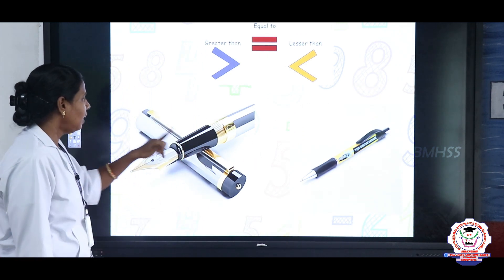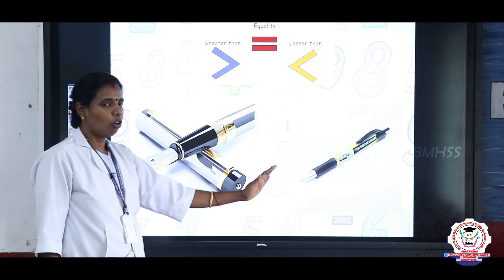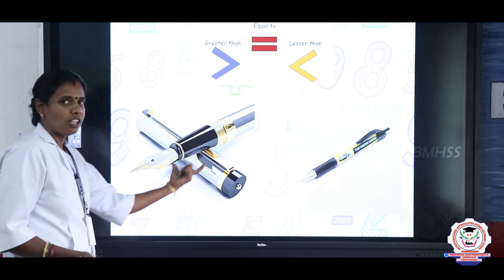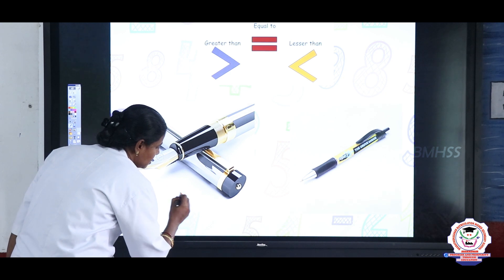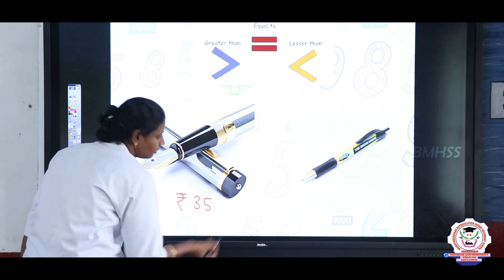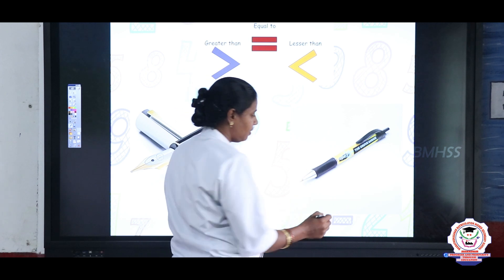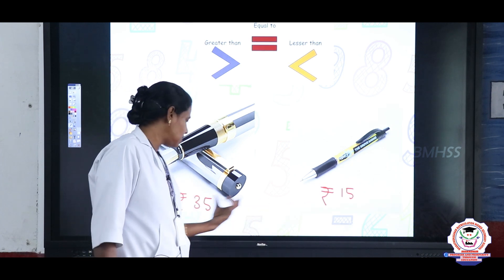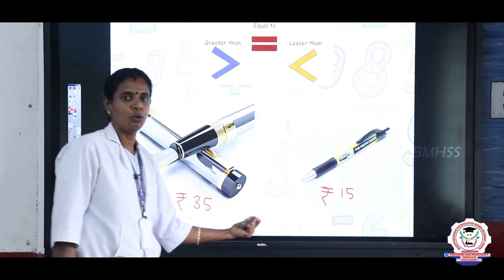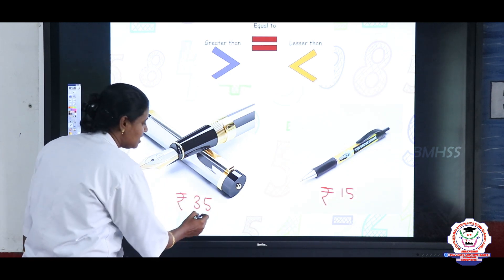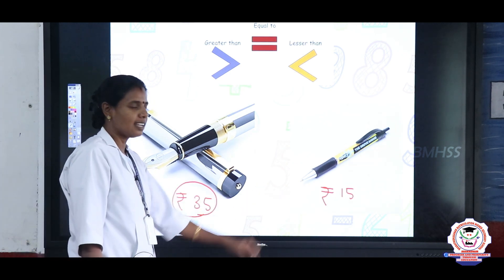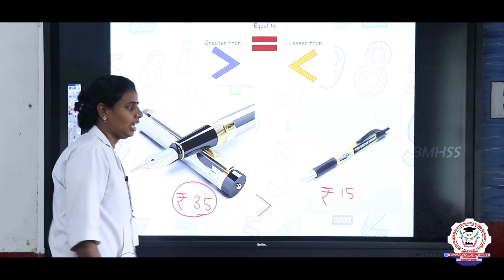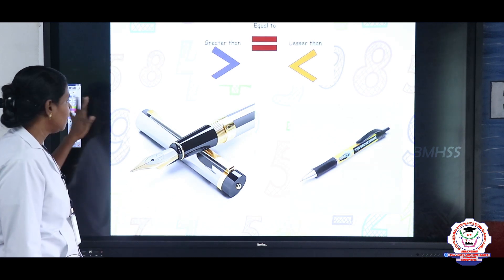Here a pen and pencil are given and we can compare the values of both products. The cost of the pen is rupees 35 and the cost of the pencil is rupees 15. Comparing these two values, 35 and 15 — which is greater? The cost of the pen is greater than the cost of the pencil. So we write: 35 is greater than 15.